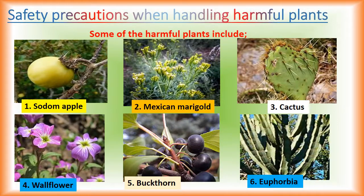Safety precautions when handling harmful plants. Some of the harmful plants in our environment include: Sodom apple, which has poisonous thorns; Mexican marigold, which is poisonous and produces an odor; Cactus, which has poisonous thorns; Wallflower, which produces a poisonous juice; Buckthorn, which is also poisonous; and Euphorbia, which produces a poisonous juice. How can we handle these plants?